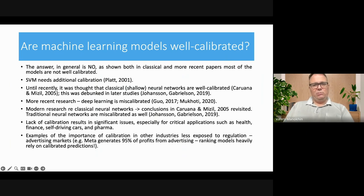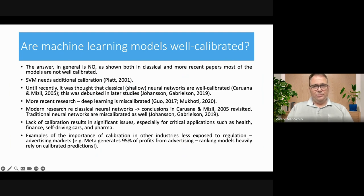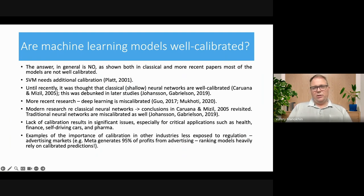Deep learning appeared big-time in 2012. About five years later, the first papers began checking whether deep learning is calibrated. There was a very interesting paper by Guo in 2017 on calibration of deep neural networks, and the conclusion was that deep learning is miscalibrated. They noted that innovations like dropout were contributing to this effect. The original finding about shallow neural networks was also revised — they too are miscalibrated. This is a very important issue especially for critical applications in health, finance, self-driving cars, and pharma.